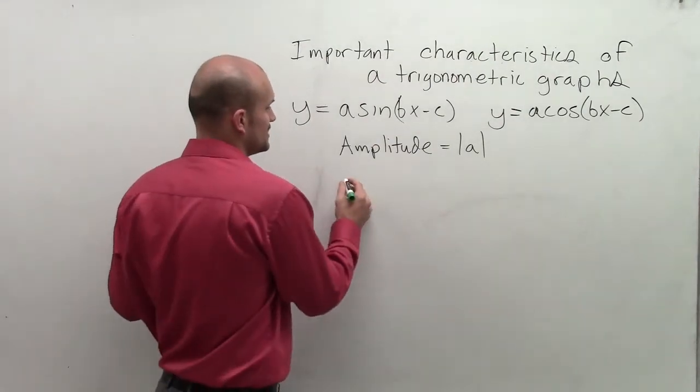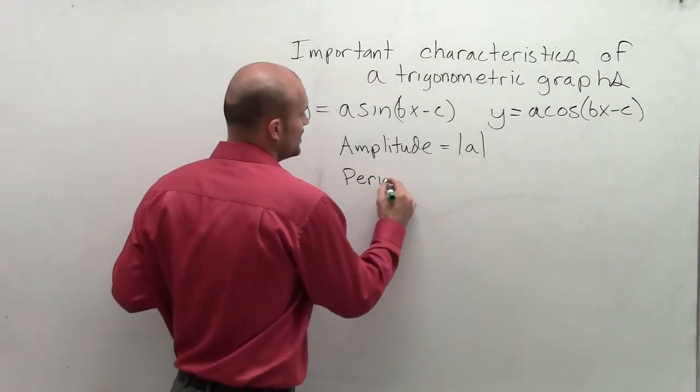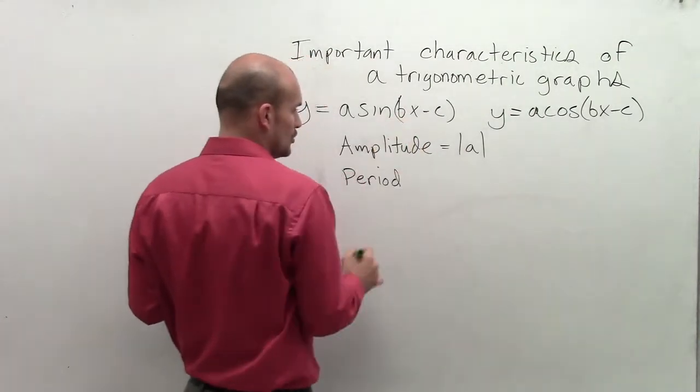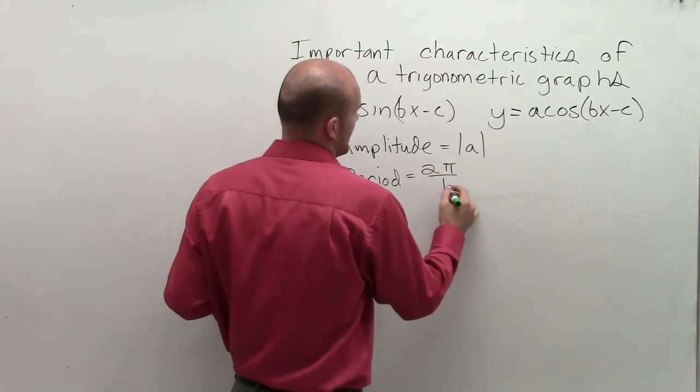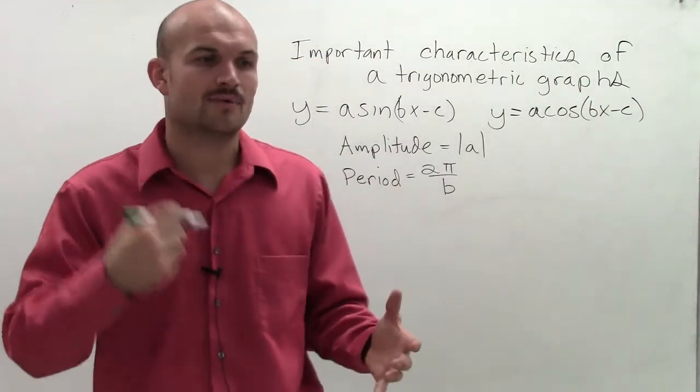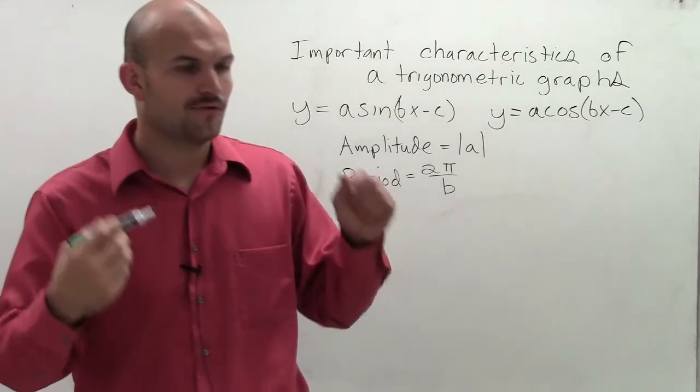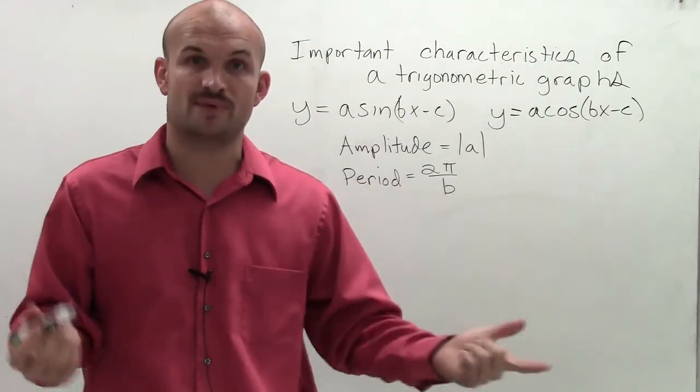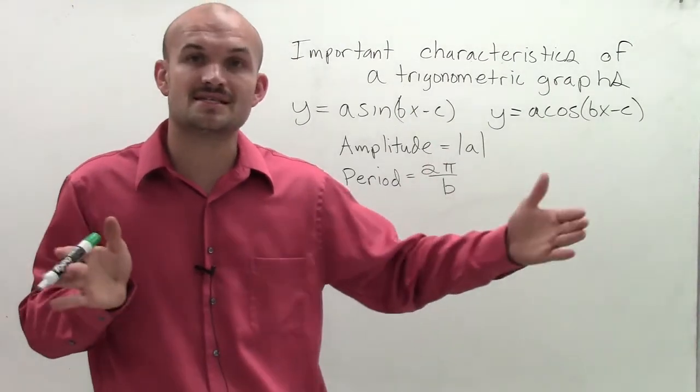Then the next thing we're going to talk about is our period. Now the period is going to be related to your b, where we have 2 pi divided by b. If you remember, when we graphed originally sine and cosine, when I went through the whole cycle, for us to go through a whole cycle where the graph actually started to repeat itself, it took us a distance of 2 pi.